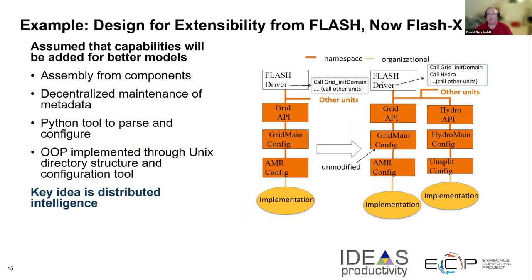You can take this even further. This is an example from the FLASH astrophysics code, which is basically designed from the start with a component concept. Those components carry with them metadata about the state variables they need to access and things like that. They provide this metadata in a way that a Python tool can parse and configure it, so you can assemble these components in different collections in different ways to get different simulation capabilities. This is a fairly sophisticated, long-lived application that has been designed for extensibility and modifiability right from the start.